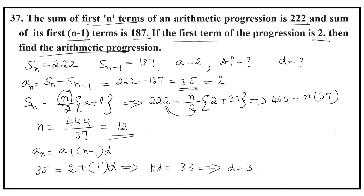Now we can write the arithmetic progression. a is 2 and d is 3. The first term is 2; 2 plus 3 is 5, the second term; 5 plus 3 is 8; 8 plus 3 is 11, and so on.